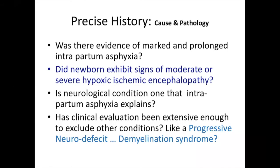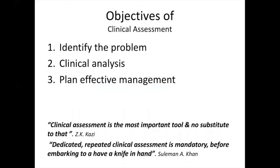Precise history helps assess whether the patient has asphyxia or another disorder, and to differentiate between a demyelination syndrome — which may be progressive — and hypoxic-ischemic encephalopathy. These are the two basic disorders for which precise history is taken. As the saying goes, clinical examination has no substitute, and dedicated clinical examination is mandatory before you embark with a knife in your hand.